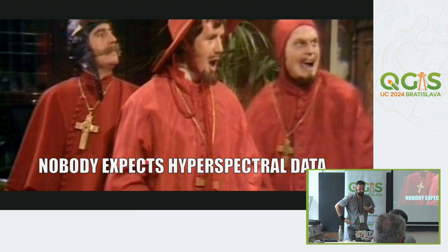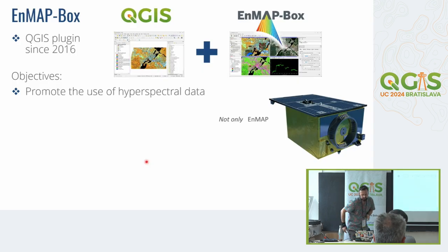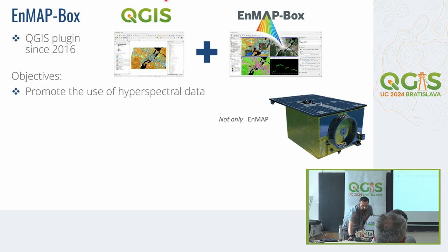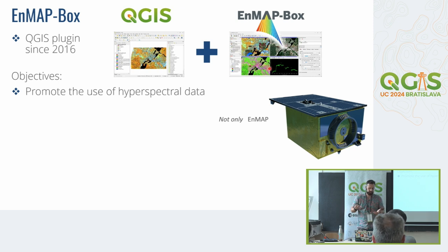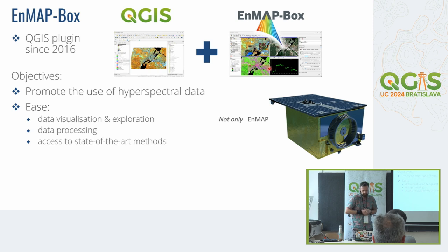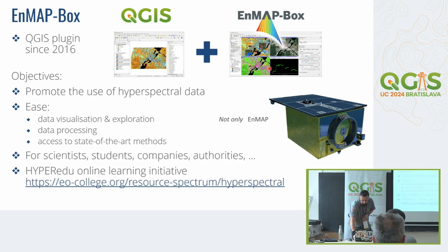We have hyperspectral data but it's hard to use it in standard QGIS. That's why we started to develop the EnMAP Box, and since 2016 we have done it as a QGIS plugin. The idea is to use QGIS — which brings amazing functionality to include information from different sources and interpret your data — together with the EnMAP Box to go into the details of hyperspectral datasets. Our aims are to ease the visualization, exploration, and processing of hyperspectral data and give access to state-of-the-art methods from science.